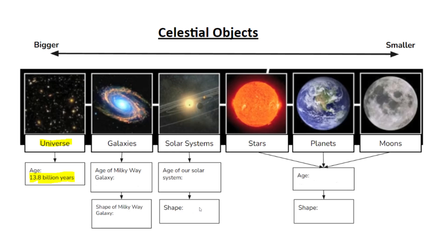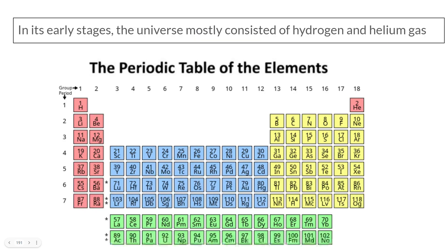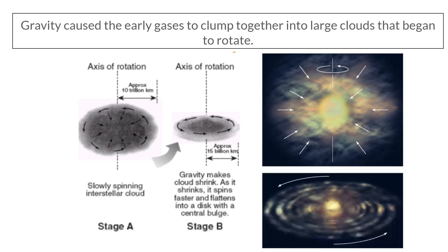Go ahead and write this down: we believe the Big Bang Theory happened around 13.8 billion years ago. In its early stages, the universe mostly consisted of gases such as hydrogen and helium. If you look at the periodic table, hydrogen and helium are the simplest elements — hydrogen has only one proton and helium has two. So those were pretty much the only gases that existed around that time.